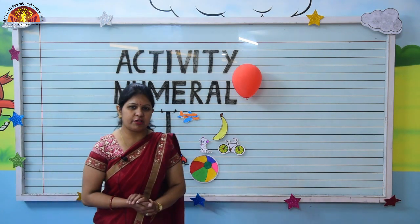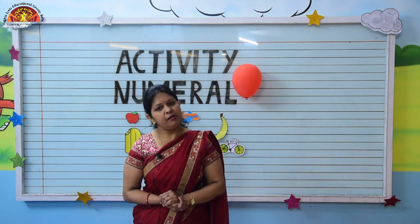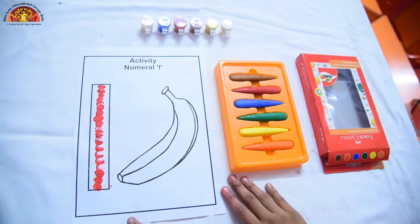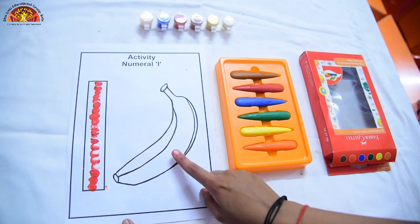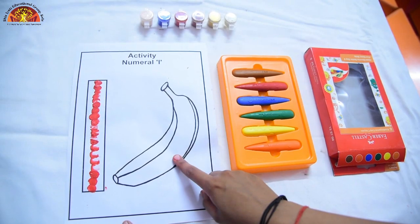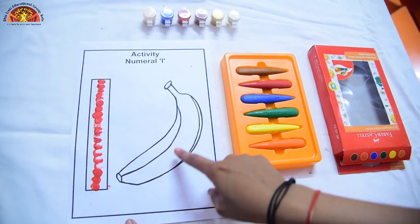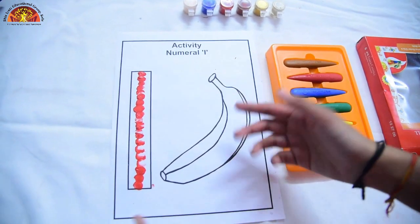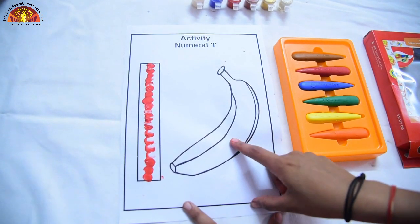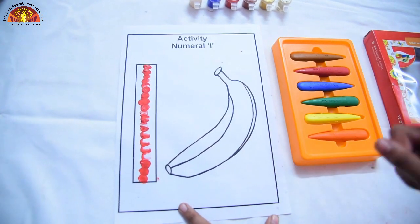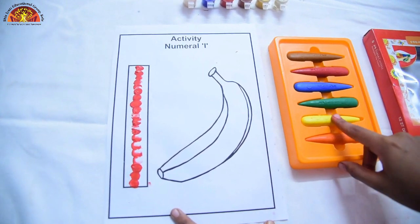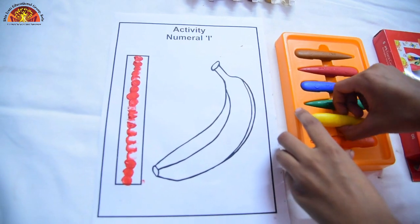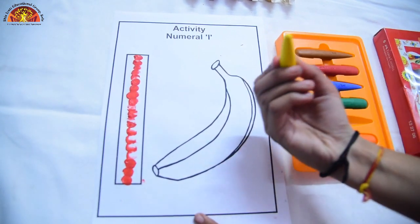Now we will do the activity of numeral one. See, kids — this is the picture of banana. What is the color of banana? The color of banana is yellow. Very good. So we will use yellow color crayon to color it.